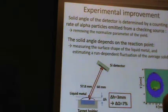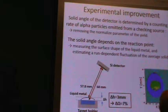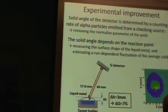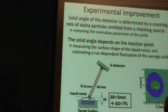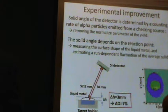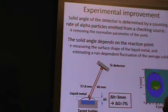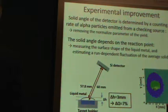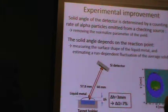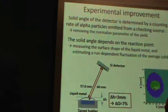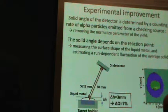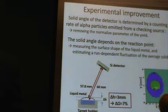Next is the experimental improvement. In the present experiment, we determine the solid angle of the detector by counting rate of alpha particles emitted from a calibration source. It removes the ambiguous parameter of the yield. However, in our liquid metal experiments, the solid angle has run dependence caused by the cleaning of the liquid metal surface by a scraper. In the previous experiment, we considered it as systematic error, estimated as about 7%. But now we measured the surface shape of the liquid metal with a laser displacement meter and corrected run-dependent fluctuations.